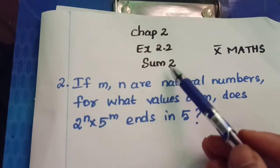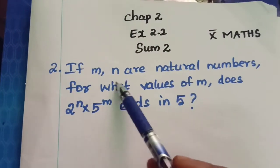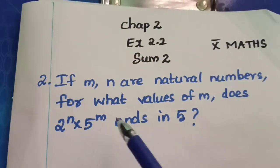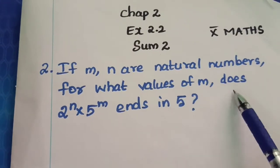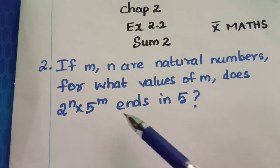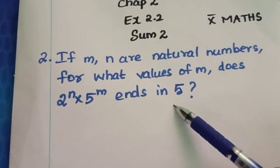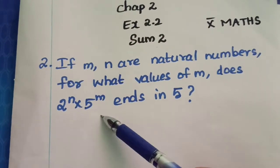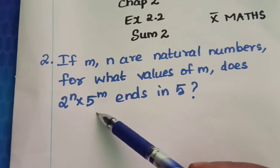Chapter 2, Exercise 2.2, Sum 2. If m, n are natural numbers, for what values of m does 2 power n into 5 power m ends in 5? 2 power n into 5 power m. It's a product, right?